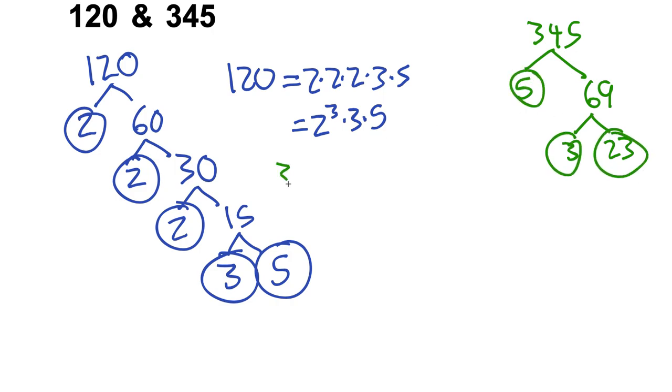So 345 is going to be 3 times 5 times 23, and there's no fancy way of writing that because all these terms are just appearing once.